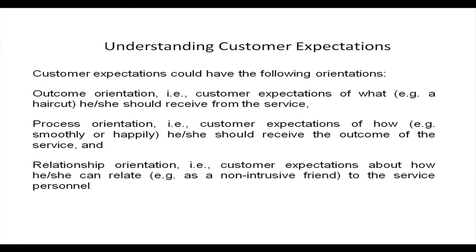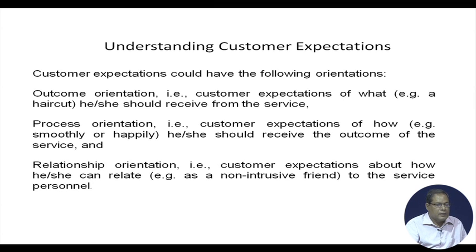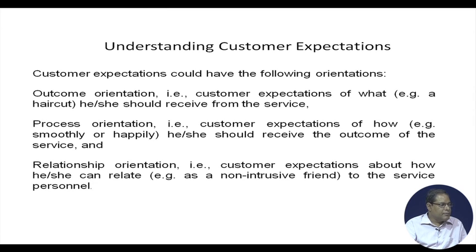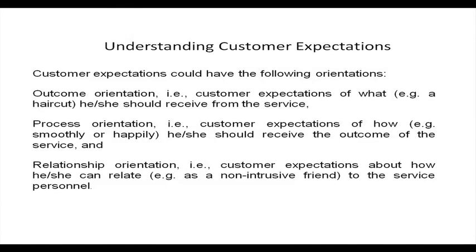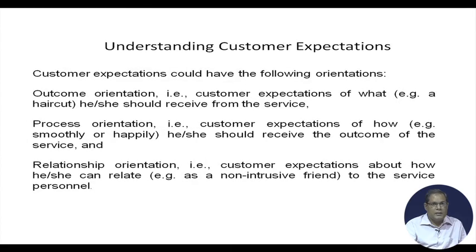Customer expectations could have the following orientations: outcome orientation — customer expectations of what he or she should receive from the service, such as a haircut; process orientation — customer expectations of how, for example smoothly or happily, he or she should receive the outcome; and relationship orientation — customer expectations of how he or she can relate to the service personnel, such as as a non-intrusive friend. So these are the three orientations of customer expectation.